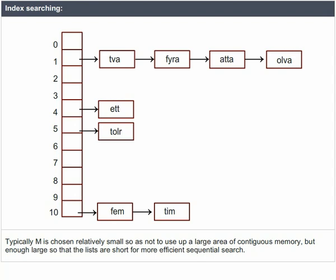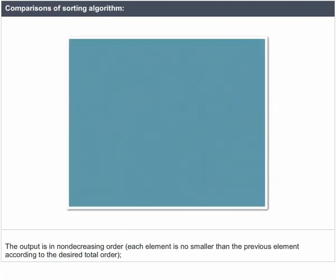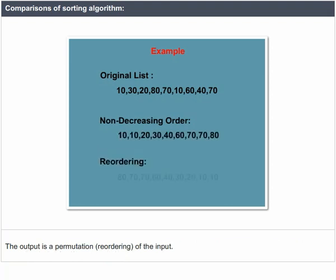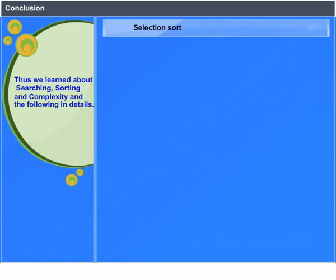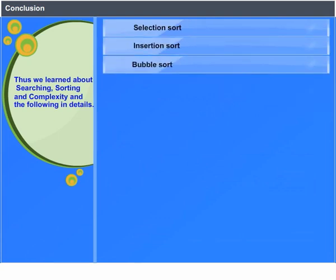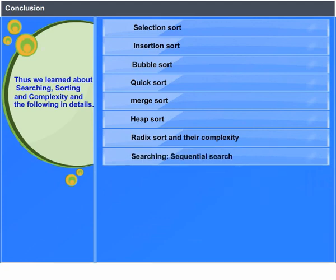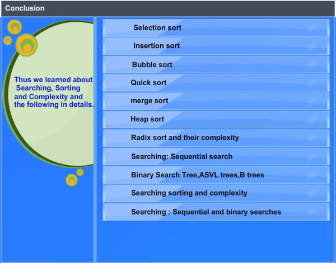Recommendations in the literature vary from M being about 1/10th of N to M being equal or close to N. The output is in non-decreasing order — each element is no smaller than the previous element according to the desired total order, and the output is a permutation of the input. Thus we learned about searching, sorting, and complexity, covering: Selection Sort, Insertion Sort, Bubble Sort, Quick Sort, Merge Sort, Heap Sort, Radix Sort and their complexity, as well as Sequential Search, Binary Search Tree, AVL Trees, B-Trees, Indexed Searches, and Hashing Schemes.